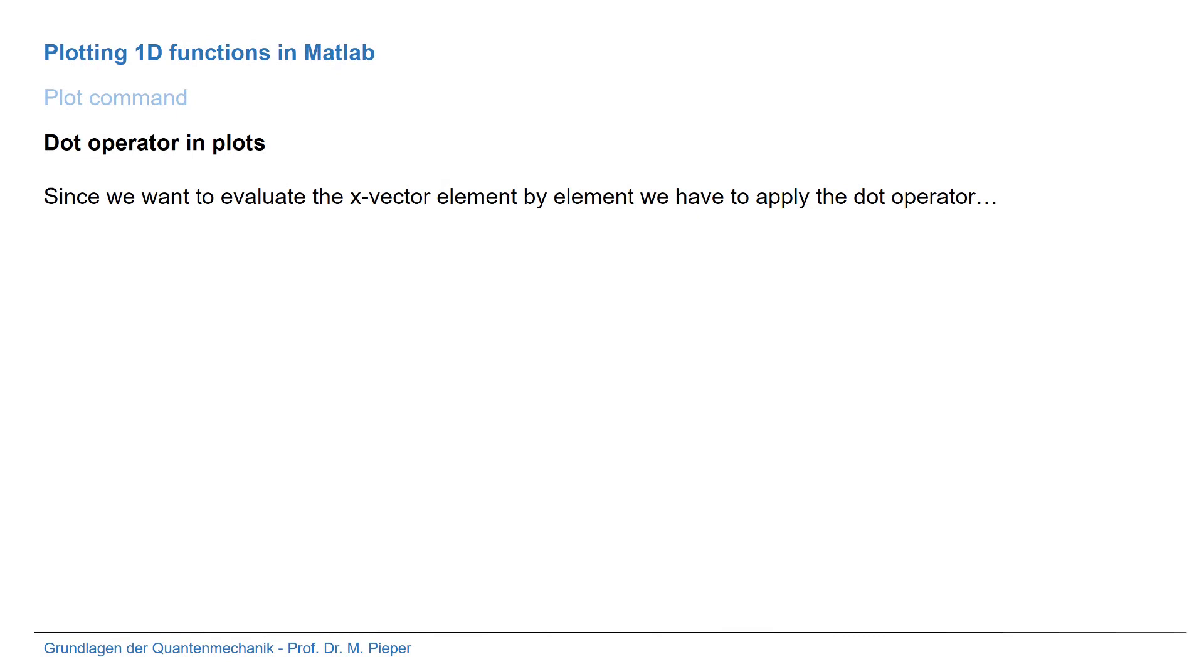We already saw that we have to apply the dot operator - a typical student mistake. Here are some examples. When calculating the square of vector X, or any powers in general, we always need the dot operator. When multiplying two functions like sine and cosine, we need the dot operator - it's dot-times cosine.